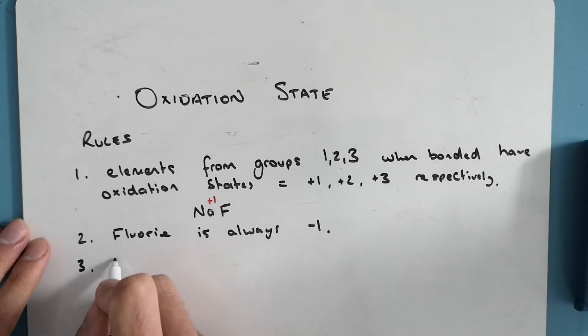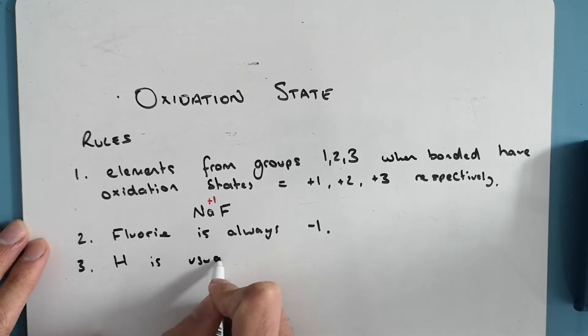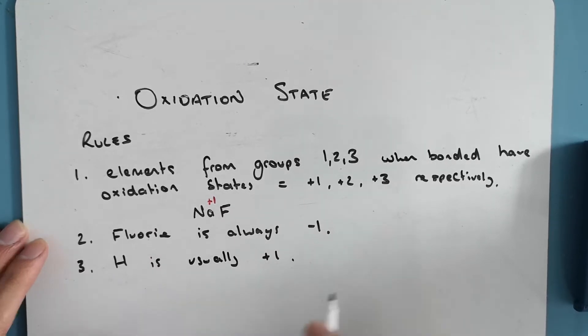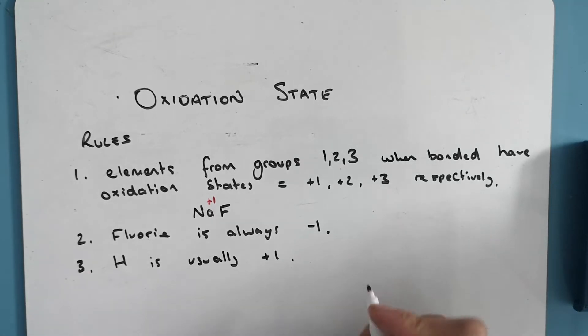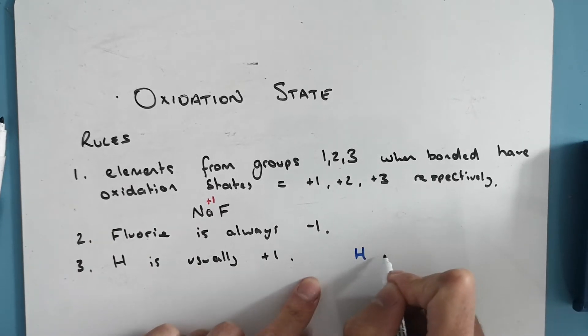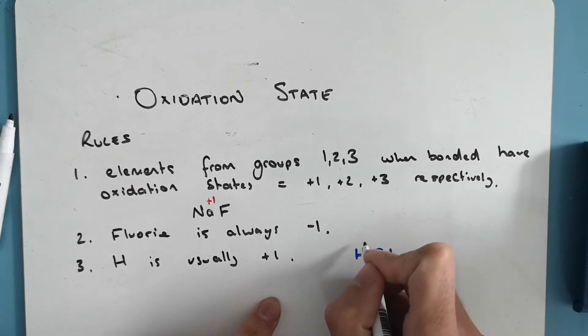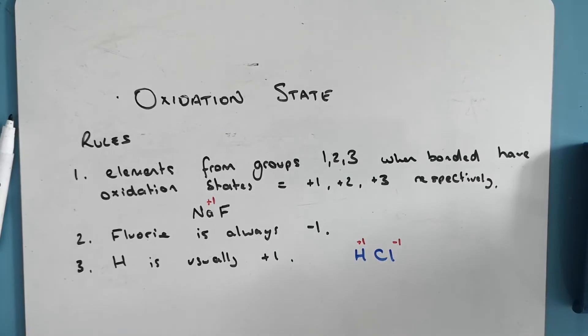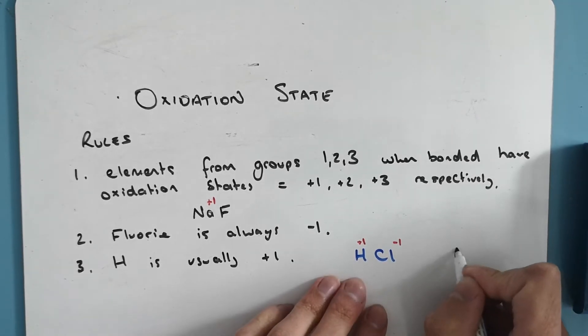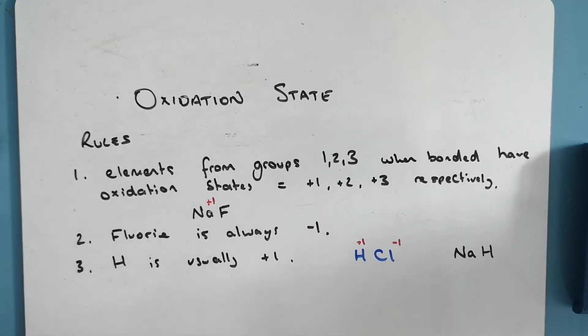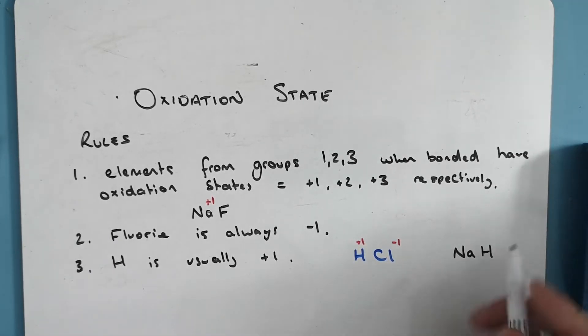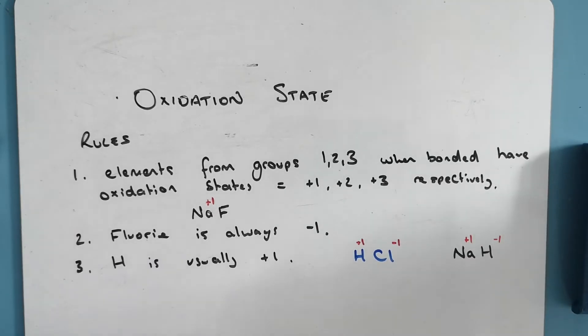Three, hydrogen is usually plus one, and that's when it's covalently bonded. It's not very electronegative. So if we take an example here, when it's with HCl, the electrons move towards the chlorine, so we get plus one hydrogen, minus one chlorine. The exception is when it's bonded to a metal, because then it's more electronegative than the metal, we get an ionic bond. The electrons go towards the sodium, so then hydrogen becomes minus one. So it's usually plus one in a covalent bond, when it starts to bond with metals though, it goes to minus one.